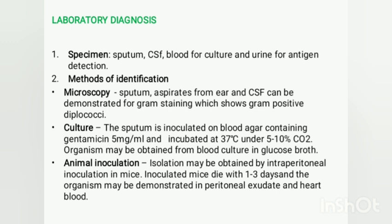For culture, sputum, blood, or CSF can be used as specimens. Sputum, after homogenization, is inoculated on blood agar plates and incubated at 37°C under 5–10% carbon dioxide, which facilitates hemolysis. After 18 hours, Streptococcus pneumoniae produces small dome-shaped, glistening colonies with an area of green discoloration, indicating alpha-hemolysis.